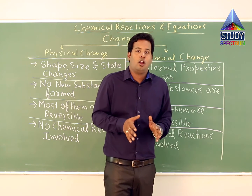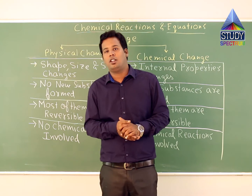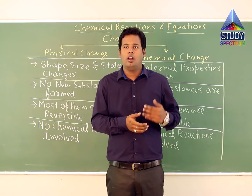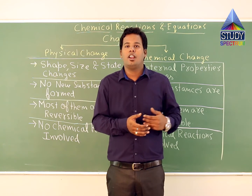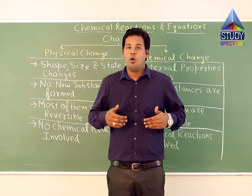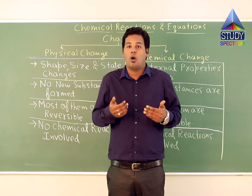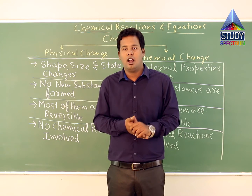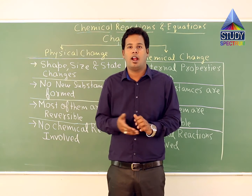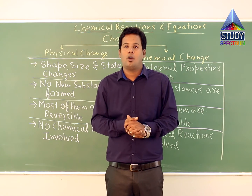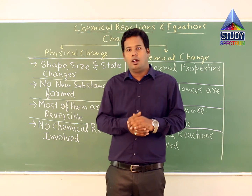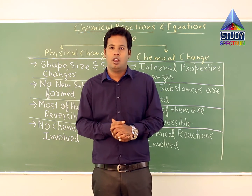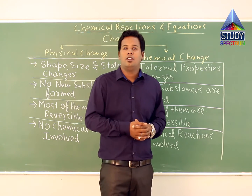We have seen that changes can be of two types: physical change and chemical change. If we learn more about chemical change, since it involves a chemical reaction, we can see how to determine whether a chemical reaction is occurring or not. There are four factors by which we can say a chemical reaction is occurring. The very first factor is change of colour.